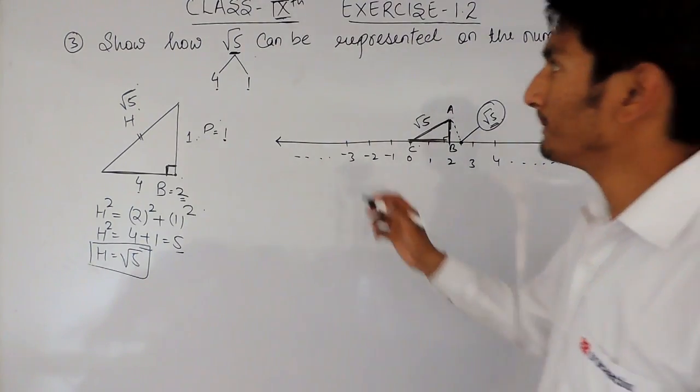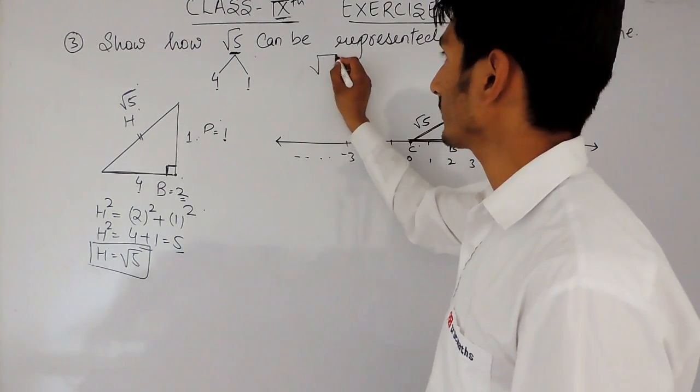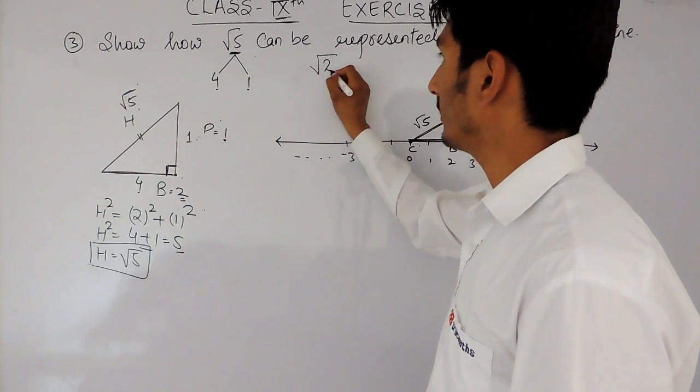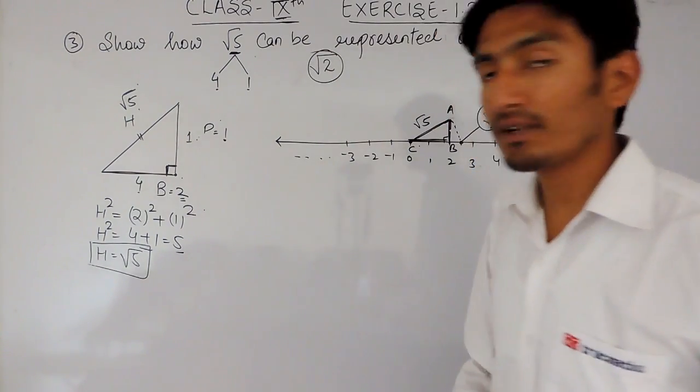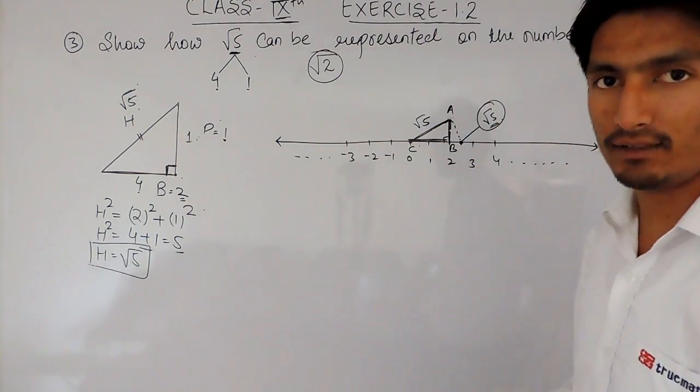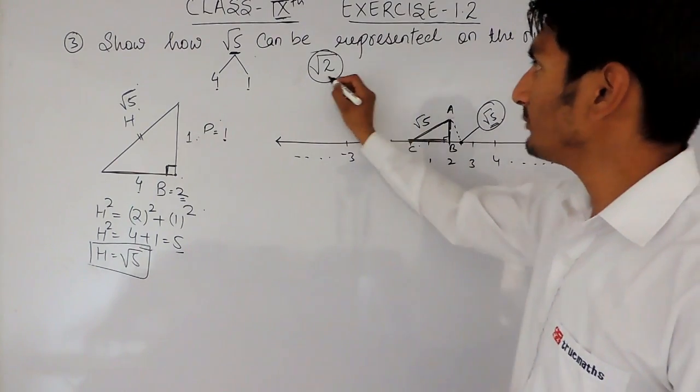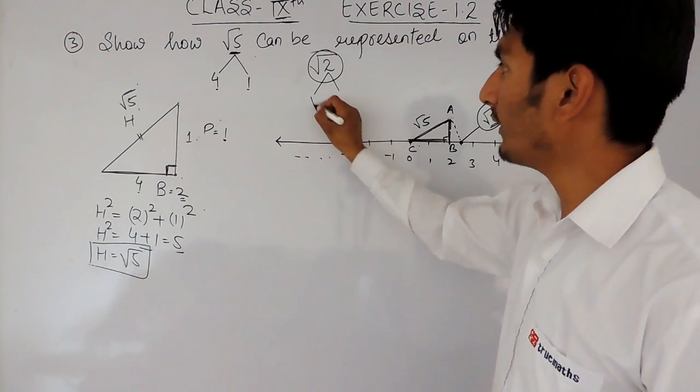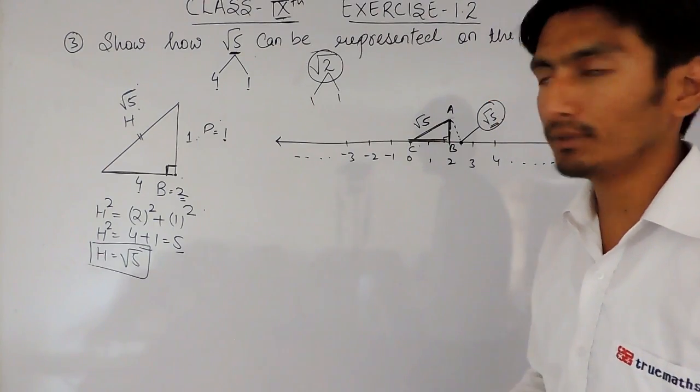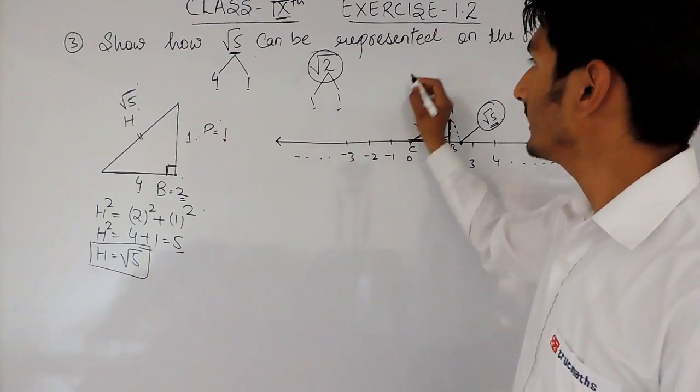Now, if you want to represent root 2 on a number line, how will you do? Say, you have to divide this into two parts, two perfect square numbers, that will be 1 and 1. Now,